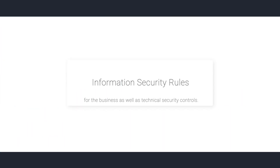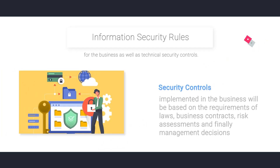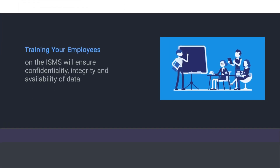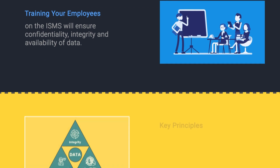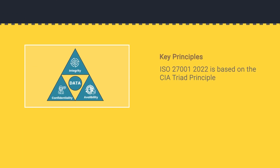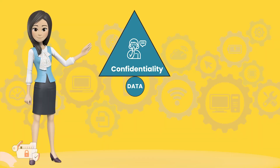As well as technical security controls, the type of security controls implemented in the business will be based on the requirements of laws, business contracts, risk assessments, and management decisions. Training your employees on the ISMS will ensure confidentiality, integrity, and availability of data. ISO 27001:2022 is based on the CIA triad principle.